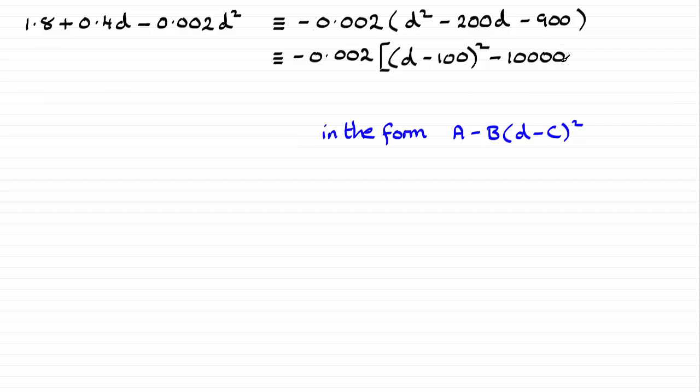This, if you worked it out now, would just give me d-squared minus 200d. And then I just tag on the end, the minus 900. OK, so we've got that line there.